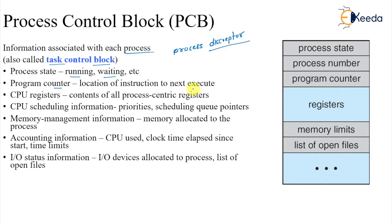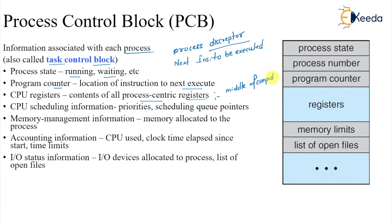The program counter is a register that always contains the next instruction to be executed. That value is also stored in the PCB. CPU register content — the content of all process-centric registers — is also stored here, since a process may be in the middle of some computation and that value needs to be saved.